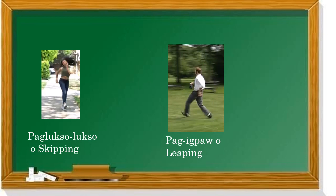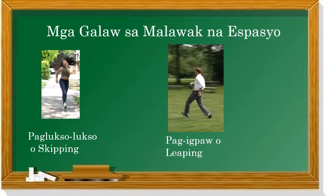Paglokso-lokso o skipping — yan ang tawag dyan. Dito naman sa pangalawang larawan, yan ay pag-ibaw o leaping. Ito ang mga galaw sa malawak na espasyo. Yung kanina — ang pag-ikot ng ating balikat, pagpihit ng ating ulo pakanan at pakaliwa — yun ay hindi umaalis sa pwesto. Ito naman, mga galaw na sa malawak na espasyo — malawak na space.